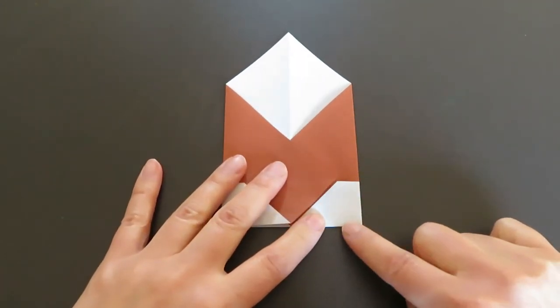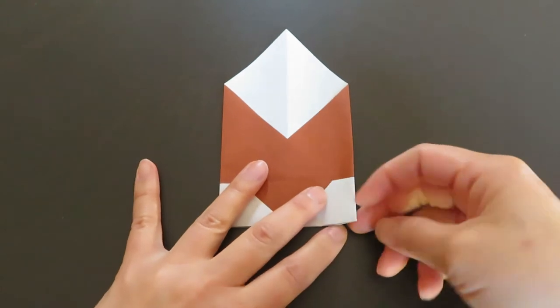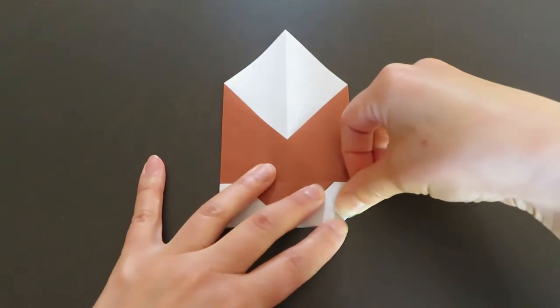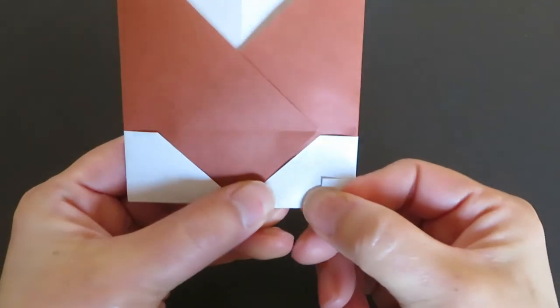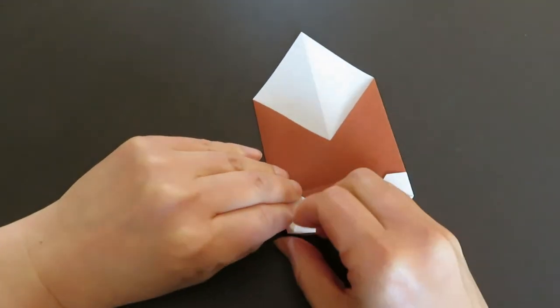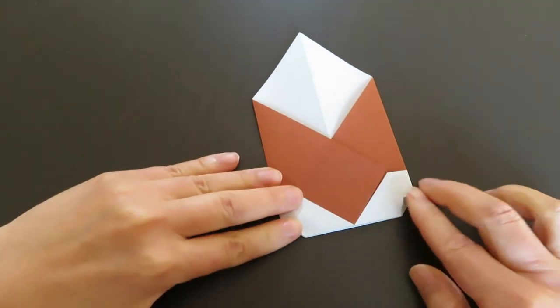Now at the end, you need to fold up a little triangle at the corner, like this. The other side is the same too. Just fold up a little triangle.